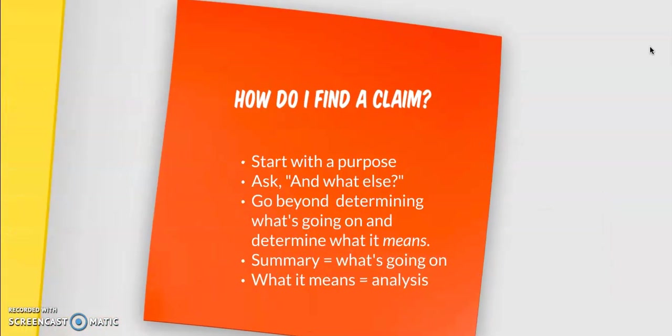So, how do you find it? Start with purpose. It's to sell a product. But then ask, what else? What else is being sold here? What other arguments are implied by this advertisement? Go beyond determining what's going on and determine what it means. If you can tell me what's going on in an advertisement, it's kind of like telling me the purpose. I already know that, and you should too, because you have more than half a brain.